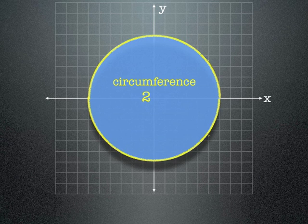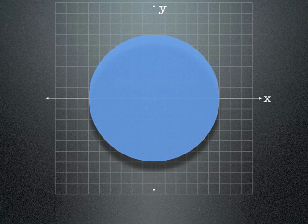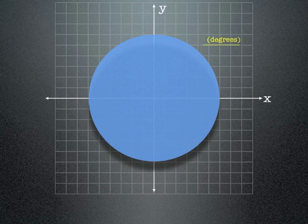The circumference is 2 pi r, and that's just a standard formula. Radians is equal to the degrees divided by 180 times pi, and again that equals radians.